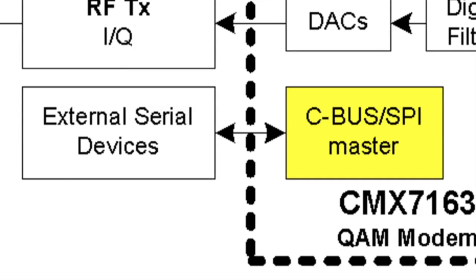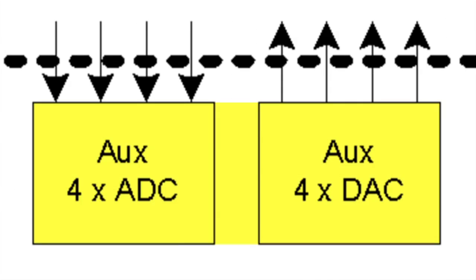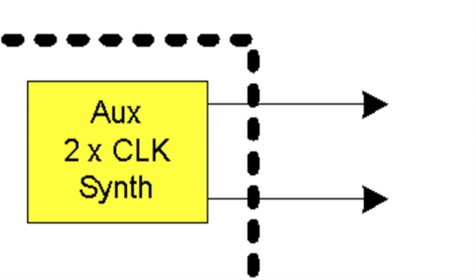The CMX7163 can pass commands and data to other SPI compatible devices, and this frees up I/O lines that are available to precisely control timing of radio functions. ADCs and DACs are available to monitor and control external circuits, and clock outputs provide timing signals to peripheral devices.